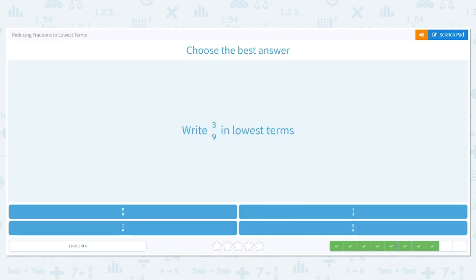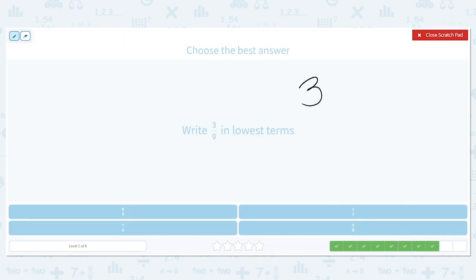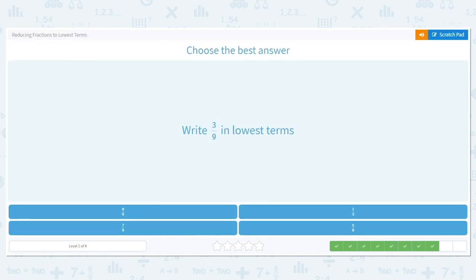Next one. 3 ninths. Well, the only two factors for 3 are 1 and 3, and we know we can't use 1. So we're going to use 3. So what is 3 divided by 3? 1. What is 9 divided by 3? Or think 3 times what equals 9? 3. So 3 ninths in lowest terms is 1 third.